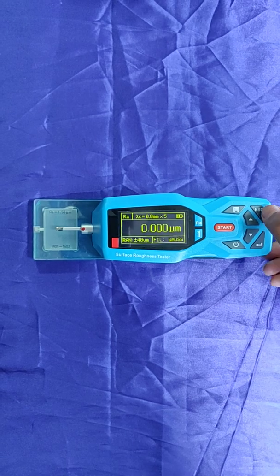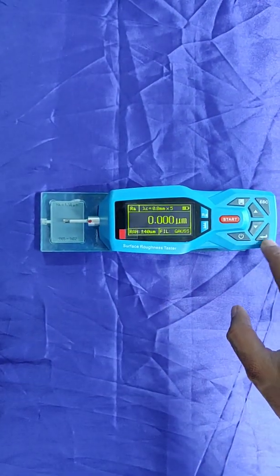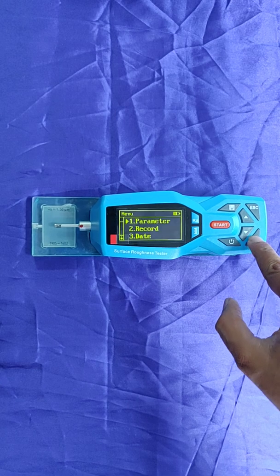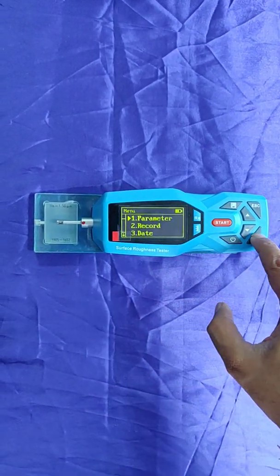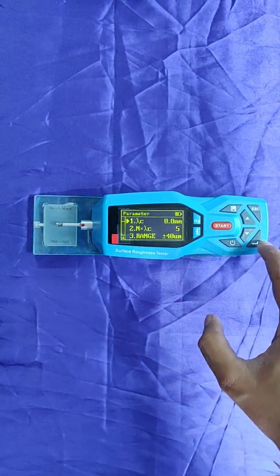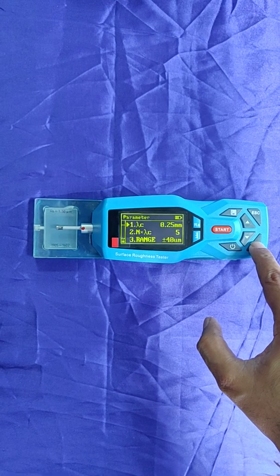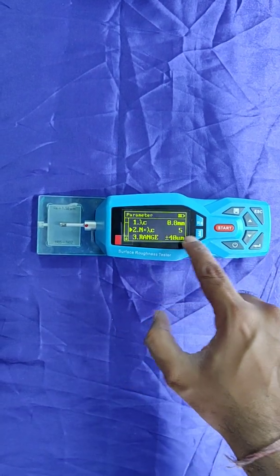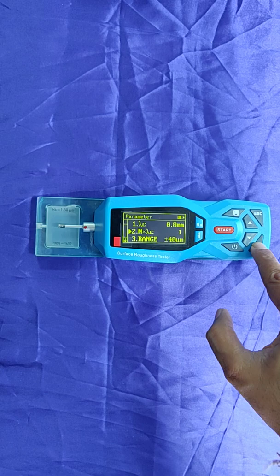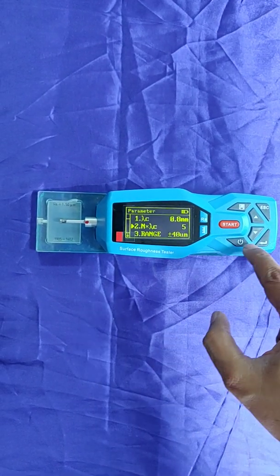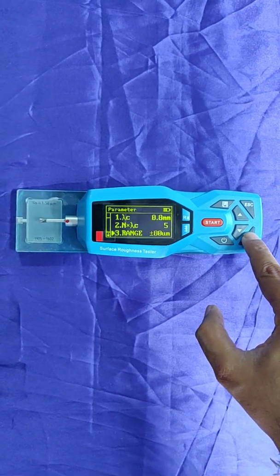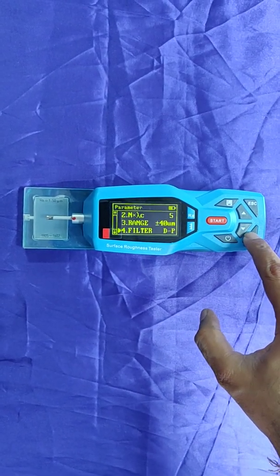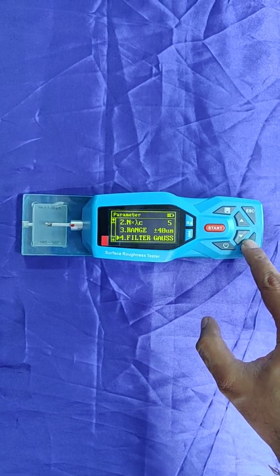First thing is we will explain the user manual. To get into the user manual, we press this enter button. This is parameters. You can change the length like 0.8, 2.5, 0.25 millimeters, but we come back to 0.8 which is the standard. Next is number of cycles: 1, 2, 3, 4, 5. Then range - 40 microns, we can change 80, 20, 40, but this is the standard. Filter: DP, RC, PCRC, but standard is Gauss.